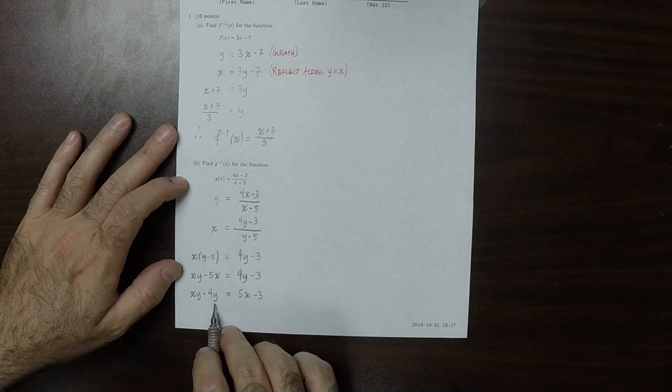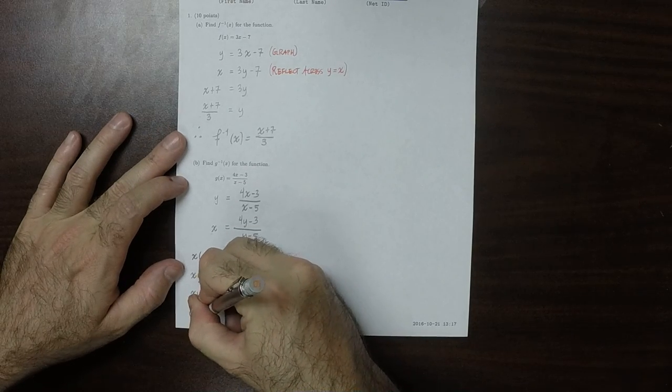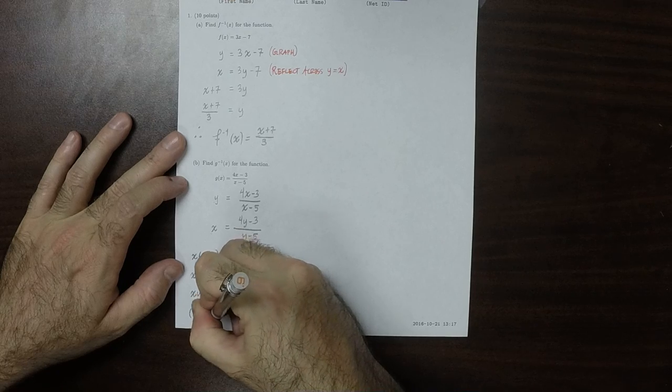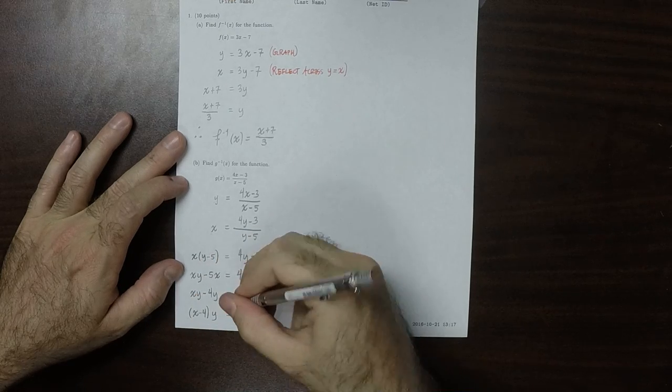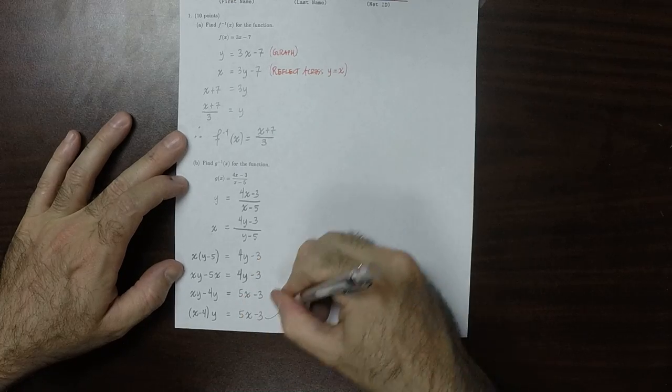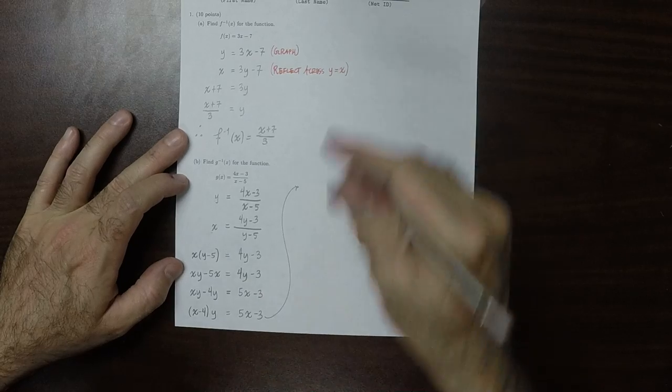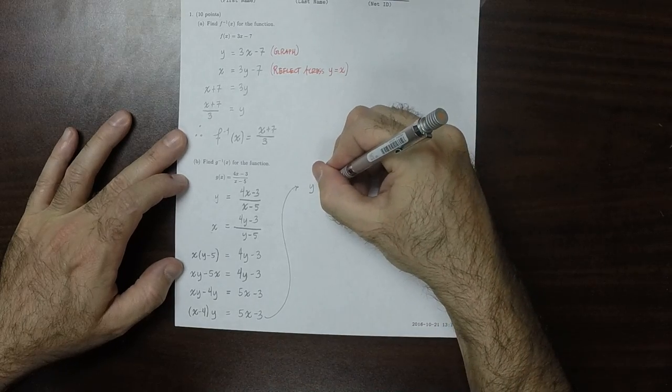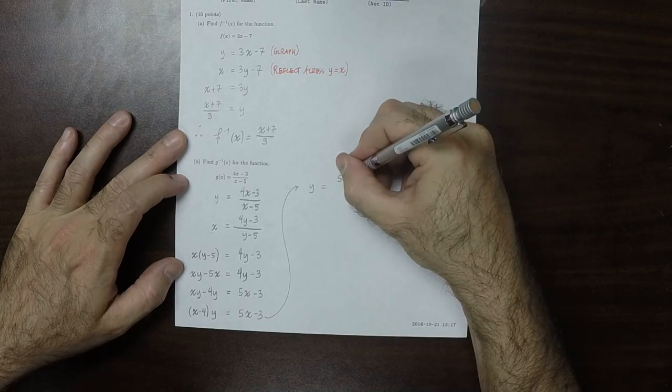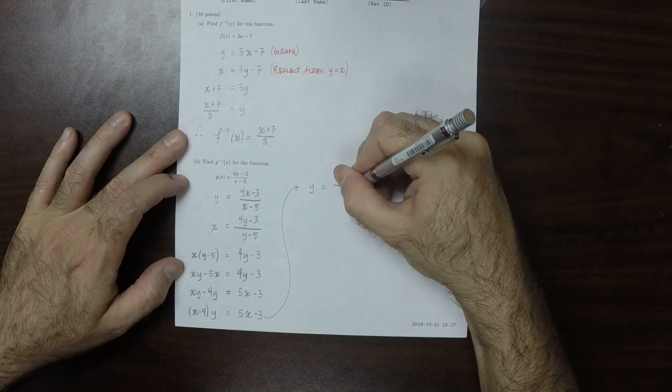And now I'll factor out the y. So this would be x minus 4 multiplied by y is 5x minus 3. So y is 5x minus 3 over x minus 4.